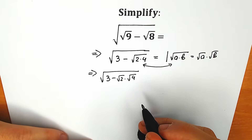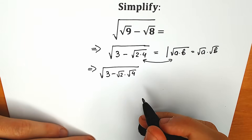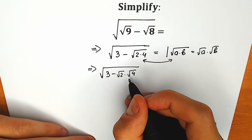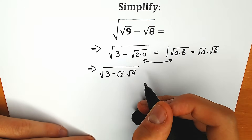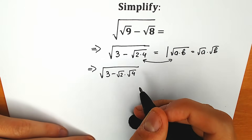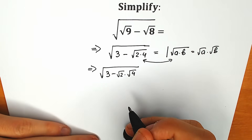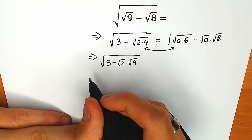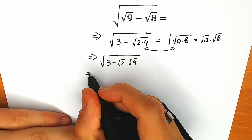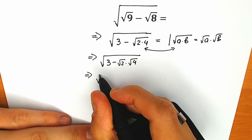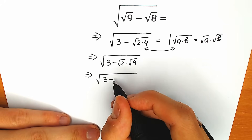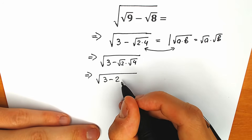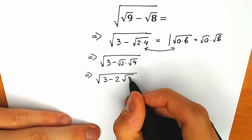Square root of 4 equals 2 — everyone knows this, it's a table case. So our expression now looks like square root of 3 minus 2 square root of 2.